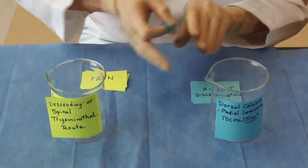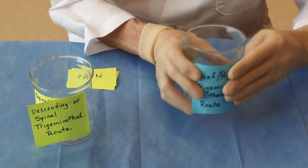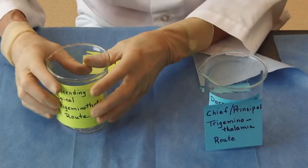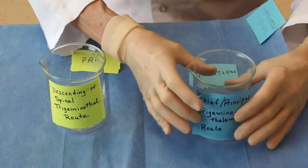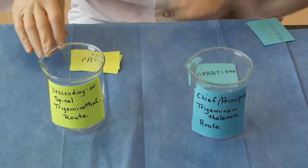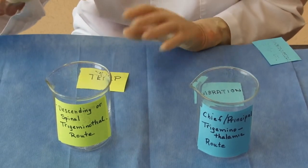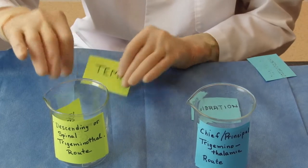And the other one is going to involve another nucleus, the principal or chief trigeminal nucleus, and so we have these two pathways, and the first one carries, just like from the body, pain and temperature, hot and cold or warm and cold.